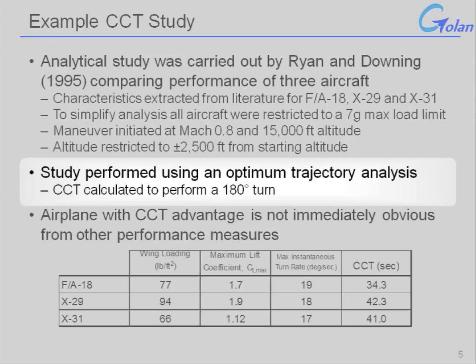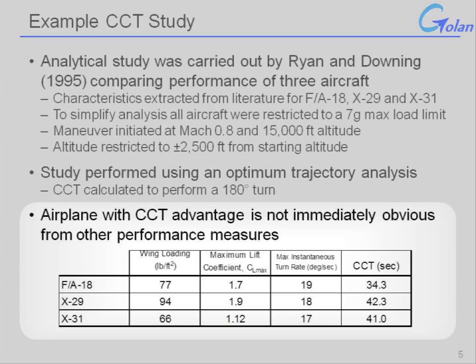In this study, they used an optimum trajectory analysis to minimize turn time, and calculated the time to perform a 180-degree turn and then recover lost energy. The results were not immediately obvious from any traditional performance measure. The aircraft with the lowest combat cycle time — the fastest turn and recovery — turned out to be the F-18, which also had the highest maximum instantaneous turn rate. However, the next lowest combat cycle time went to the X-31, which had the slowest maximum instantaneous turn rate. Because combat cycle time is a combined measure incorporating both turn rates and the ability to recover energy, it lends new insight not apparent from a single historical performance measure.